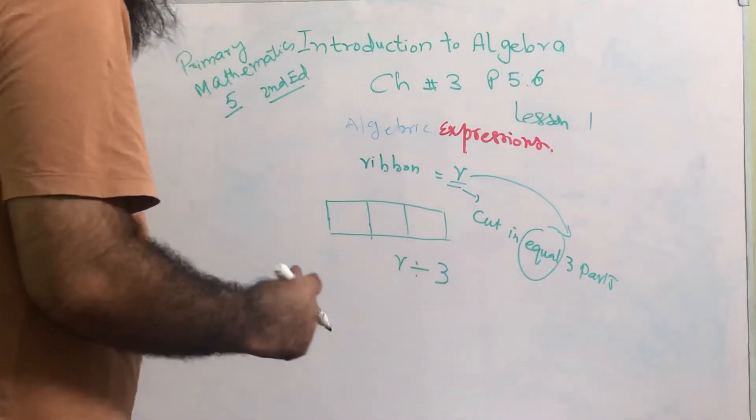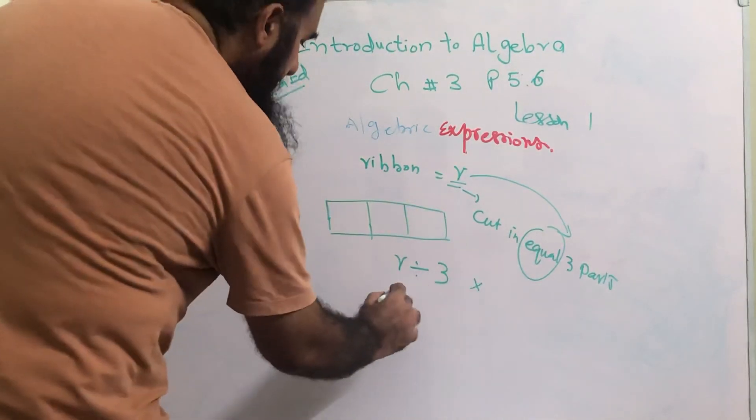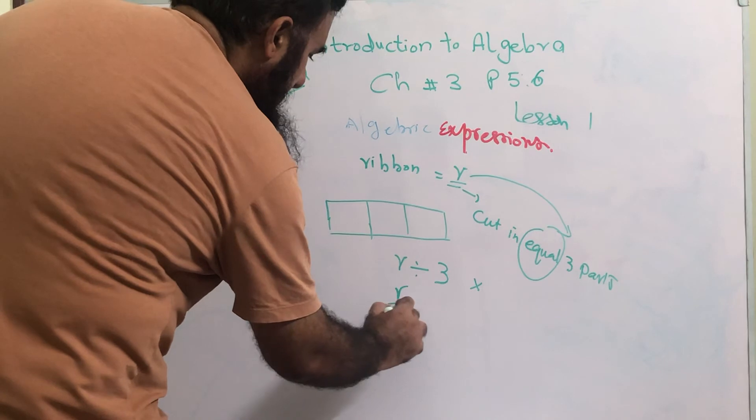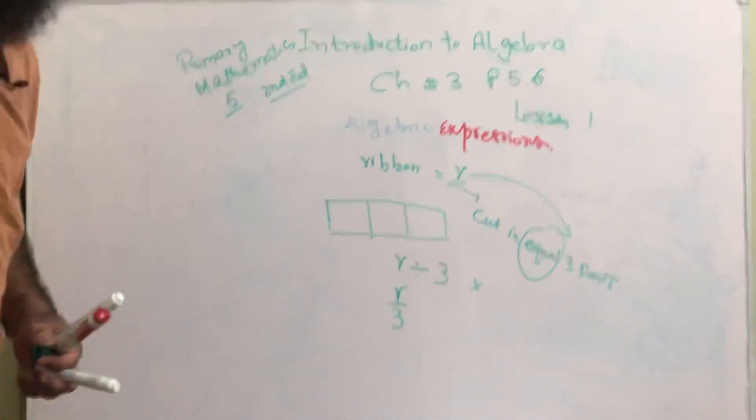But in algebraic language we don't write like this. We write it like this: r divided by three, r over three. This is the answer. This is the algebraic expression for this.